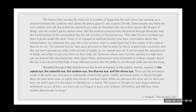Someone whose inner eye has opened at a high level can see beyond this dimension into other space-times and perceive what is invisible to ordinary people. If the eye is at a lower level, it may still have powers like the ability to see through walls and into the body. That harks back to the FBI document we were looking at, and the fact that William Foose was able not only to do this but to teach it to almost anybody — because it's actually not at a very high level of attainment.